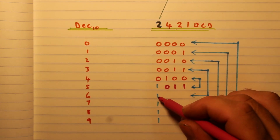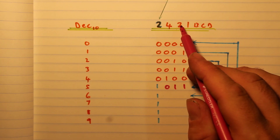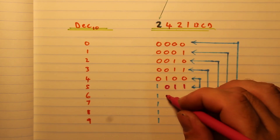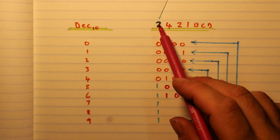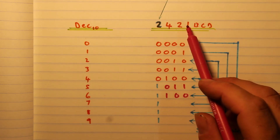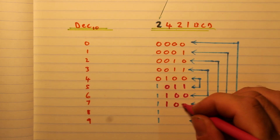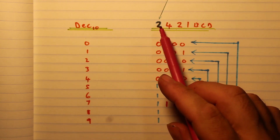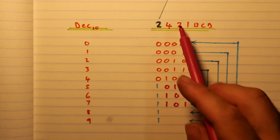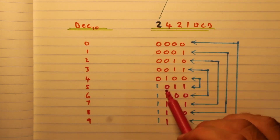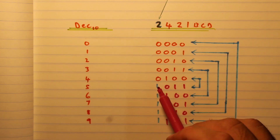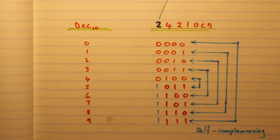For six, we've already used that two, so we use two plus four — we write 1100. For seven, we've already used that two, so two plus four plus one gives us 1101. For eight, we've already used that two, so two plus four plus two gives us 1110. For nine, we use all of them. So for numbers five to nine, you must use that second two first, then the other digits.